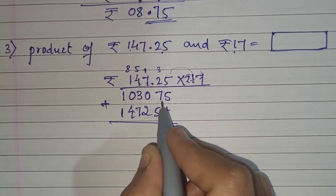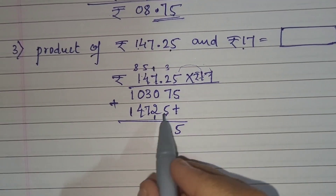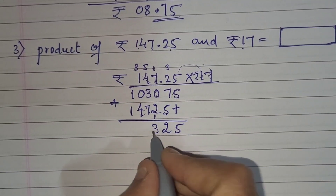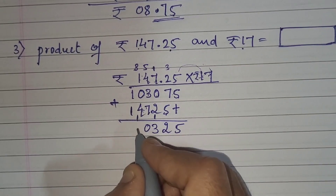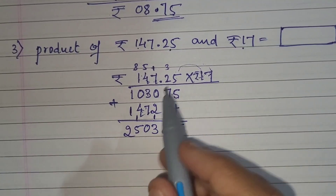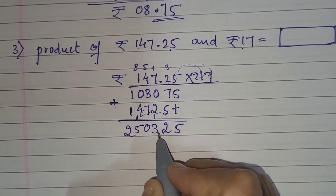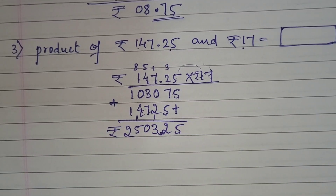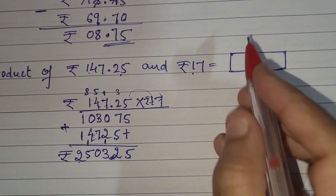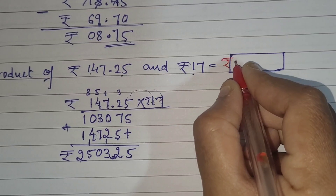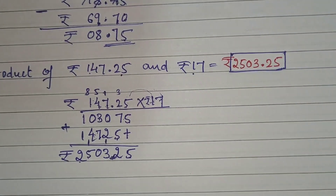Now for the second row: 1 fives are 5, 1 twos are 2, 1 sevens are 7, 1 fours are 4, 1 ones are 1. Add all these numbers. The decimal point in the question is after 2 digits, so we put it after 2 digits in the answer. Your answer is 2,503 rupees and 25 paise.